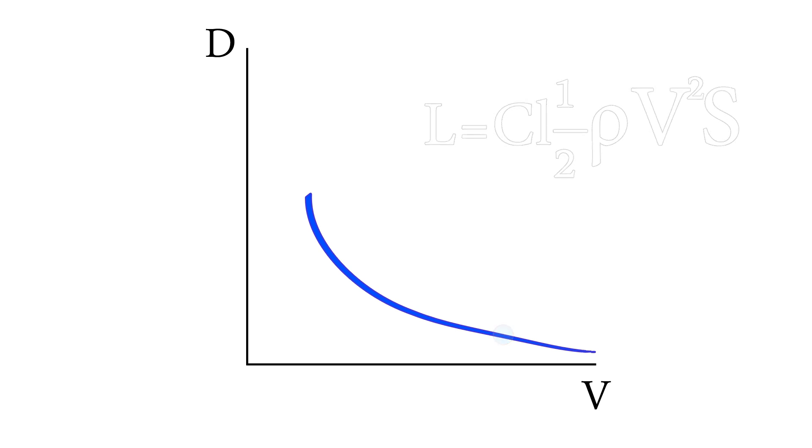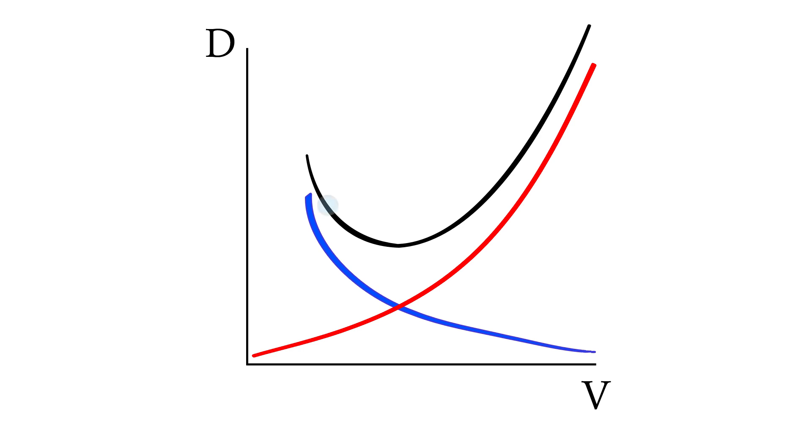If we now add up both parasite and induced drag, we get total drag, and this is the amount of drag the airplane needs to fight in order to keep its speed, accelerate or decelerate. You will notice that there is a place where these two drag curves intersect. This is the point of minimum drag. In cruise flight, the force that opposes the drag is thrust, which is produced by the engines.